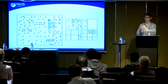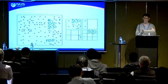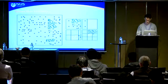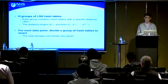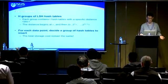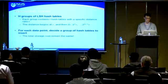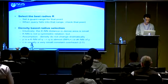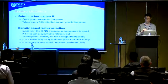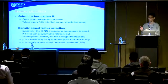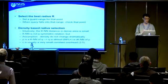In this framework, we create H groups of LSH hash tables, each group containing L hash tables with a specific radius. For each data point, we decide which group of hash tables to insert it into. The total storage cost remains the same as a single LSH index. For radius selection, setting the radius for a data point defines a guard range: when a query falls into that range, the point needs to be checked. We perform radius selection based on local density near each data point.